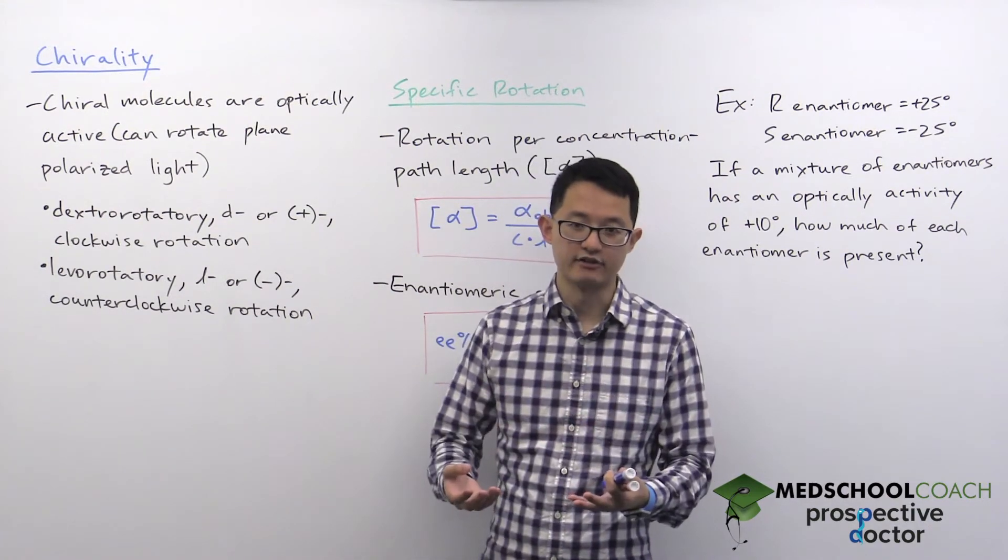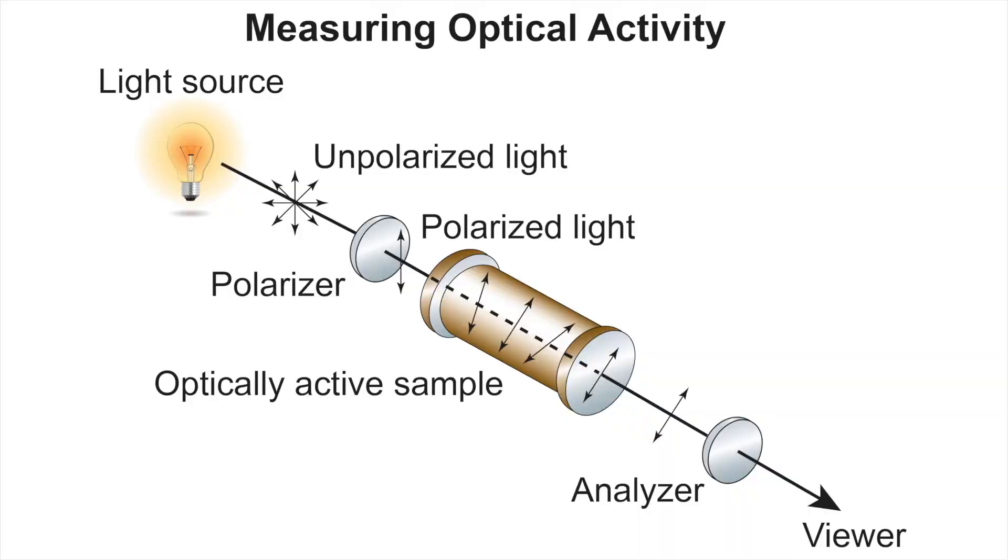As you can see in this diagram, when you want to measure the optical activity of a compound, you will first take regular light that is unpolarized. You would pass it through a polarizer to get light that is polarized in one plane.